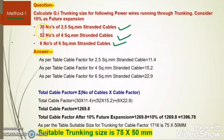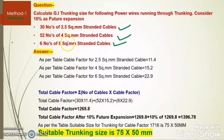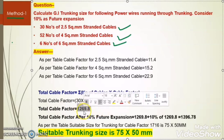The total cable factor formula is the sum of the number of cables multiplied by its cable factor. So: 30 into 11.4, plus 52 into 15.2, plus 6 into 22.9. The total cable factor is 1269.8.